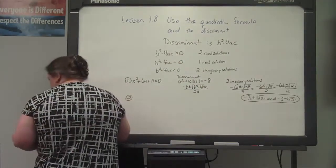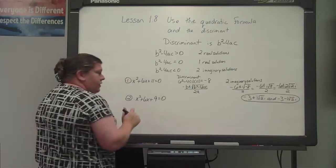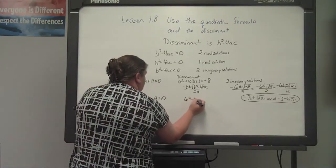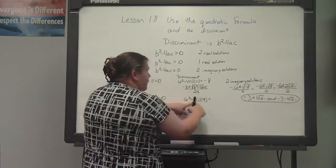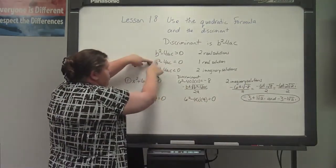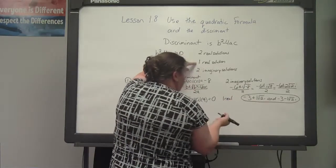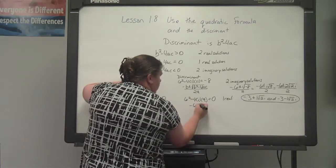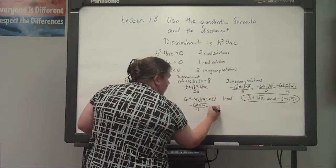Example 2: my discriminant is b squared minus 4ac, where b is 6. So 6 squared minus 4 times 1 times 9. 6 squared gives 36 and 4 times 9 gives 36. So 36 minus 36 gives an answer of 0. When b squared minus 4ac equals 0, we have 1 real solution. Using the formula with b equal to 6, negative 6 plus or minus the square root of 0 all over 2, our one real answer is negative 3.